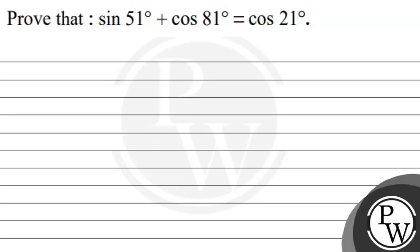Hello, let's see the question. The question says: prove that sin 51° + cos 81° is equal to cos 21°. So I am going to prove that sin 51° + cos 81° = cos 21°.